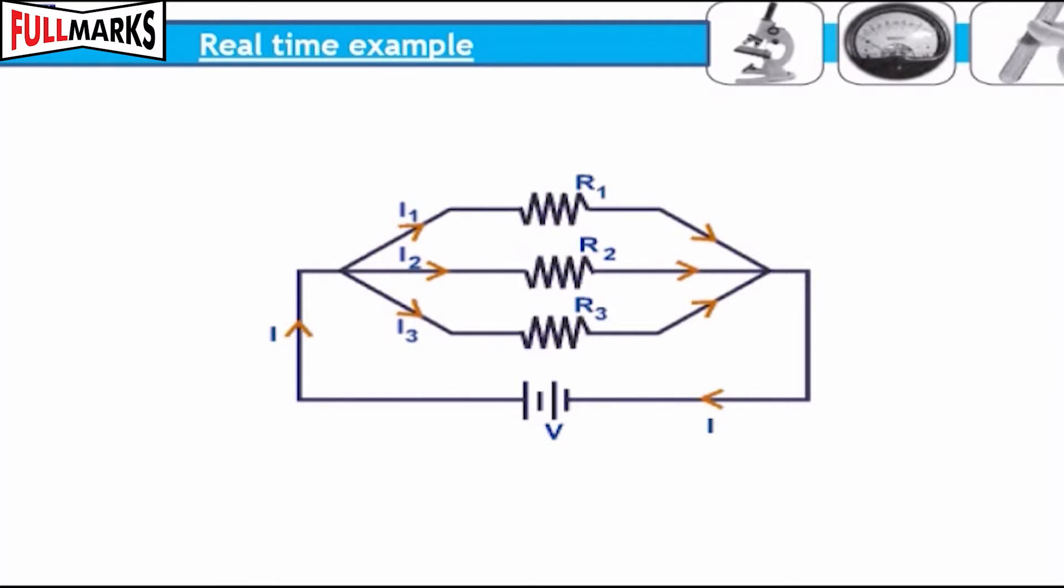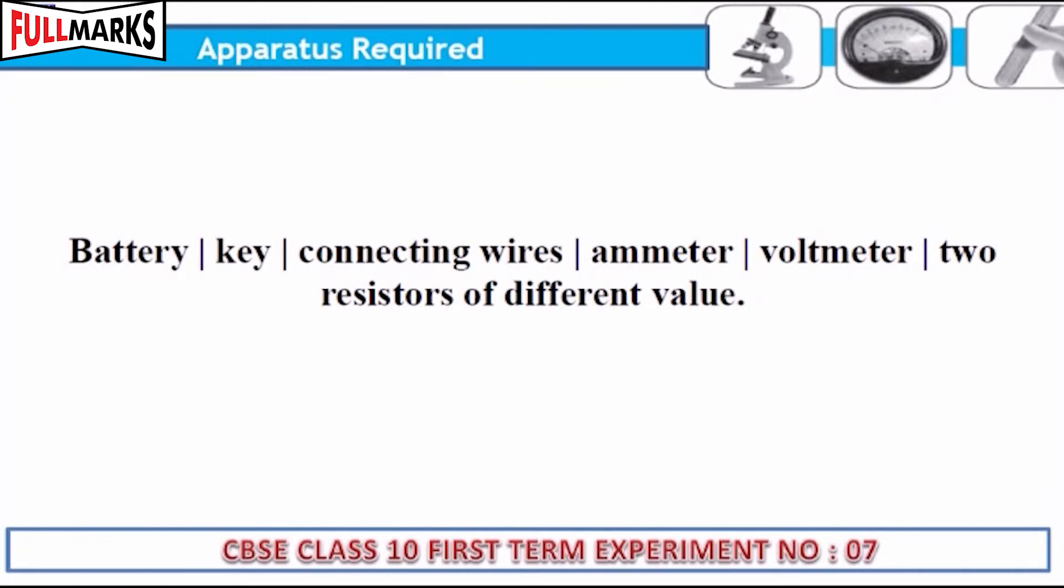The total current is always decreased when resistors are connected in parallel. Apparatus required: battery,